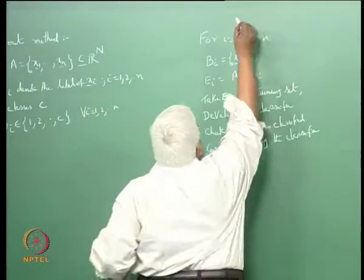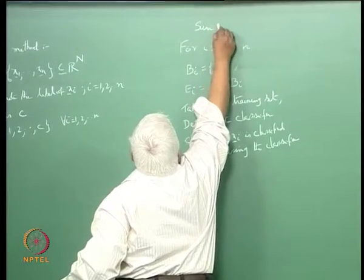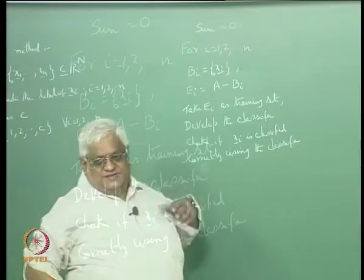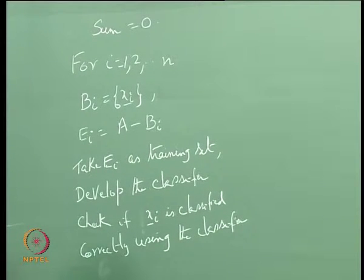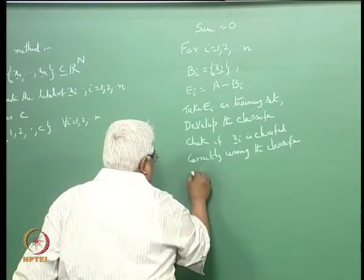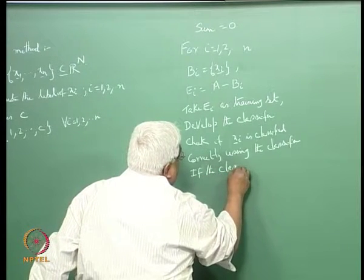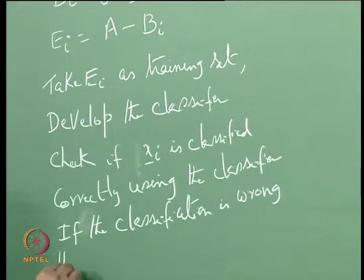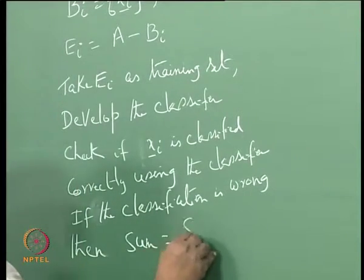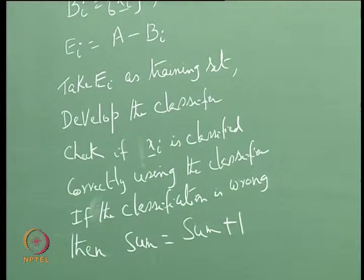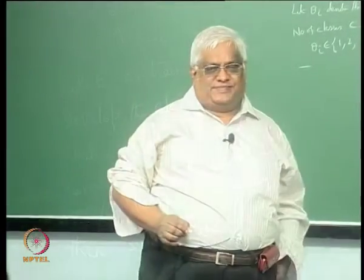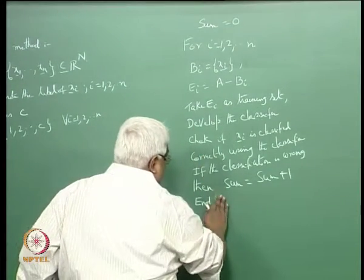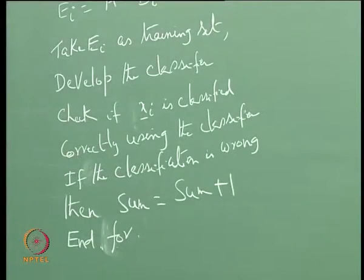Initialize sum = 0. If x_i is classified correctly, there is no change. If the classification is wrong, increment the sum. Then end the loop — repeat this for all i from 1 to n.